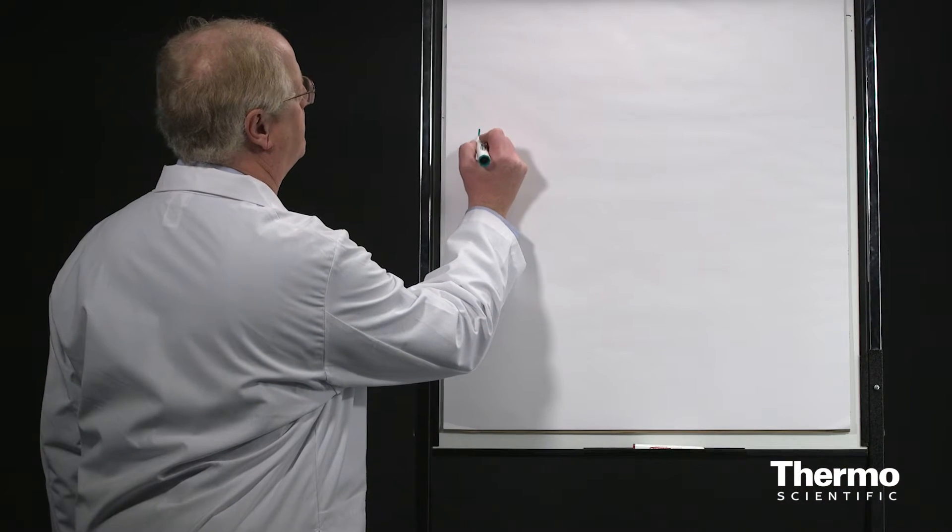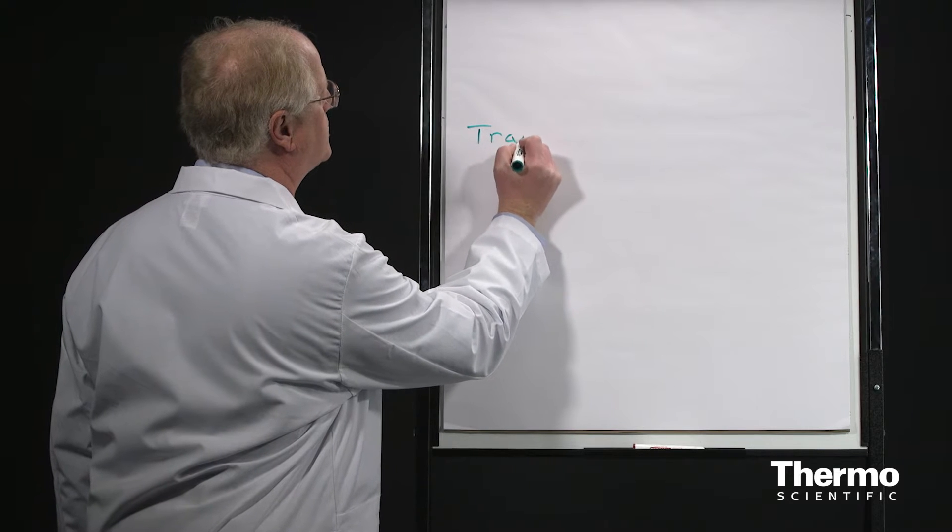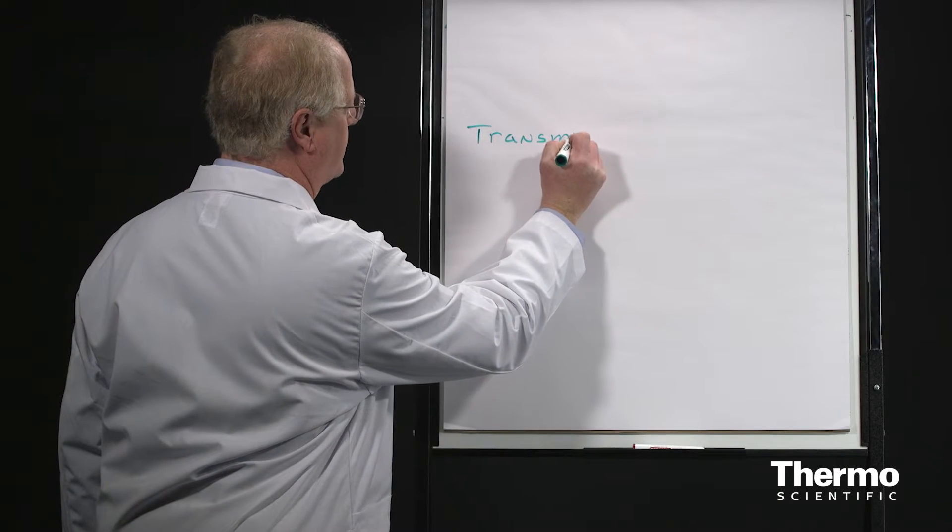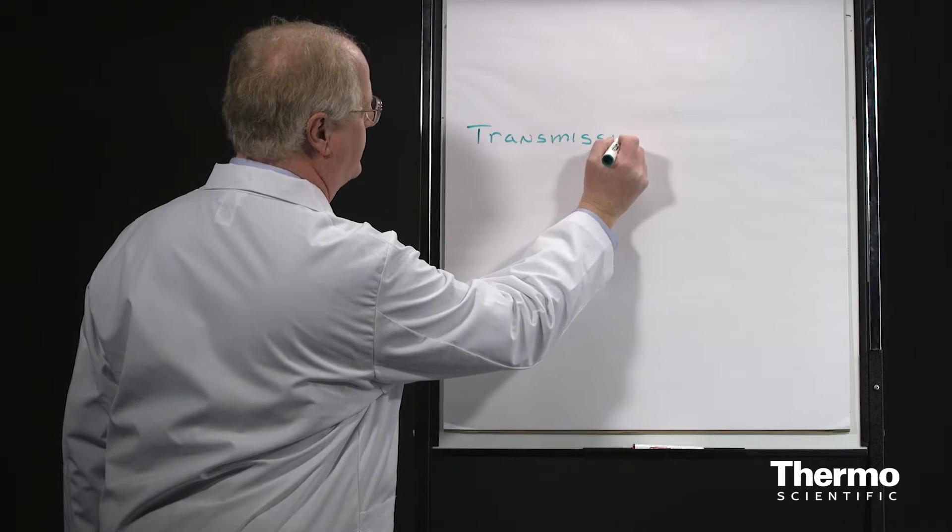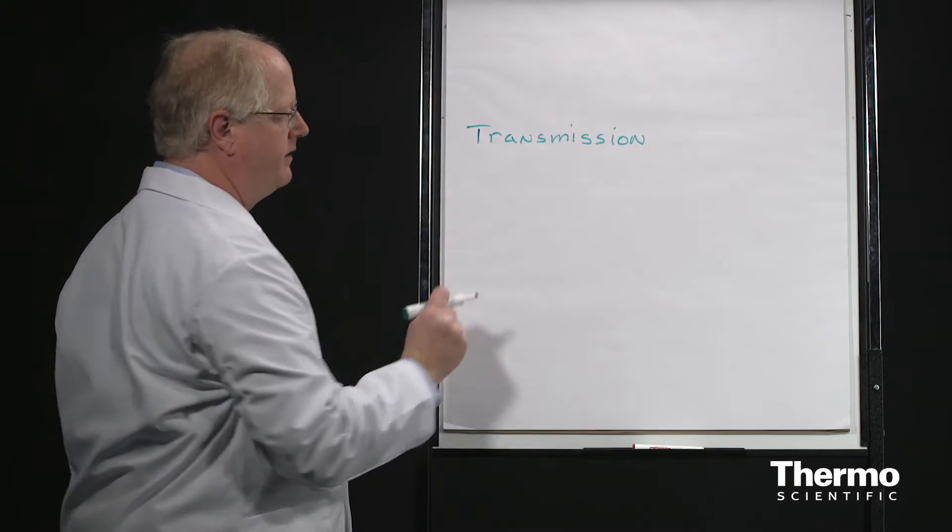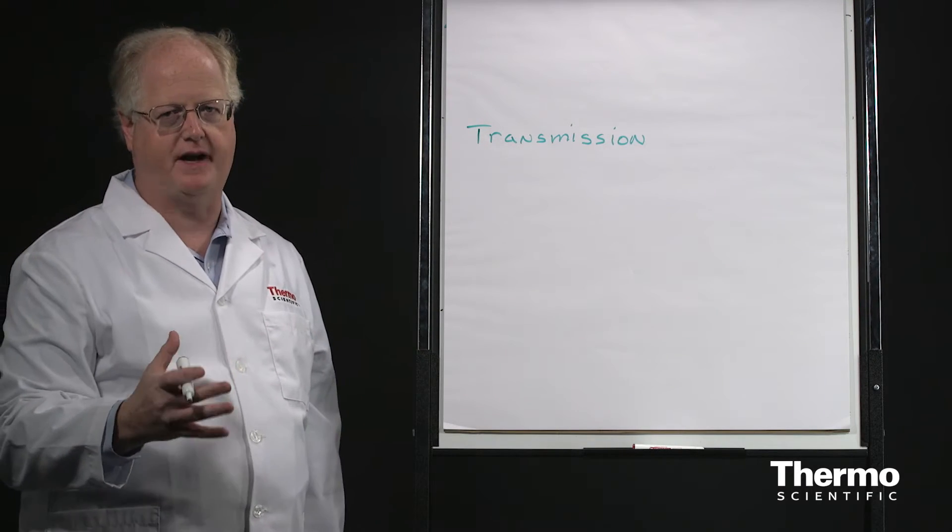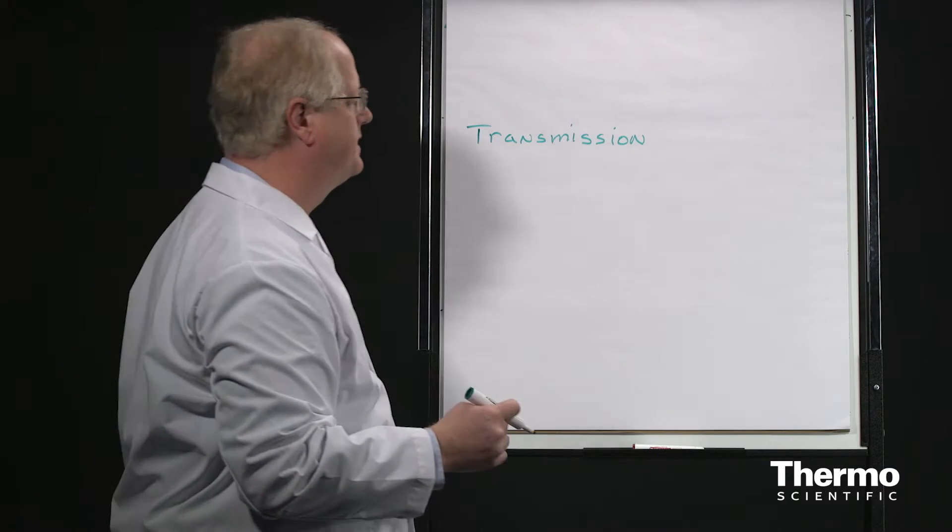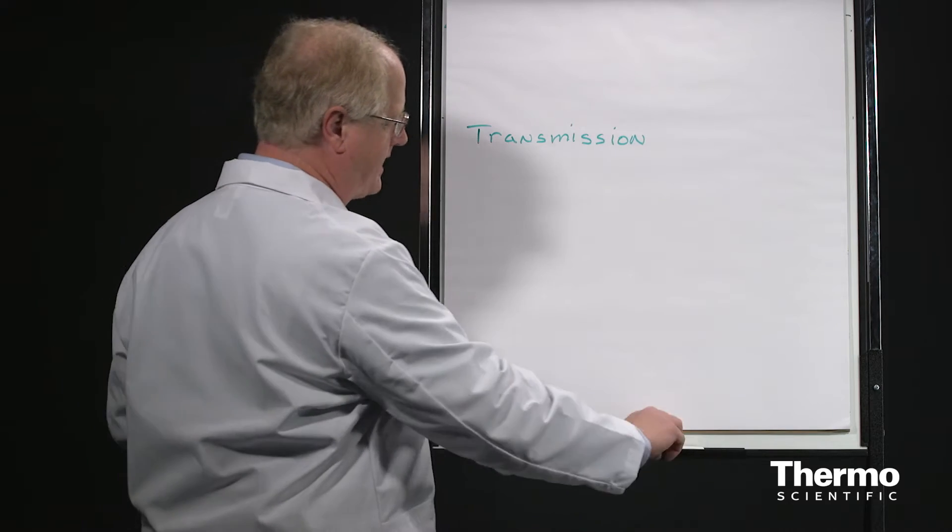Transmission is a method that has been long used in IR spectroscopy. It's very simple and quite frequently is the most cost-effective of the methods used. And basically, this is how it works.